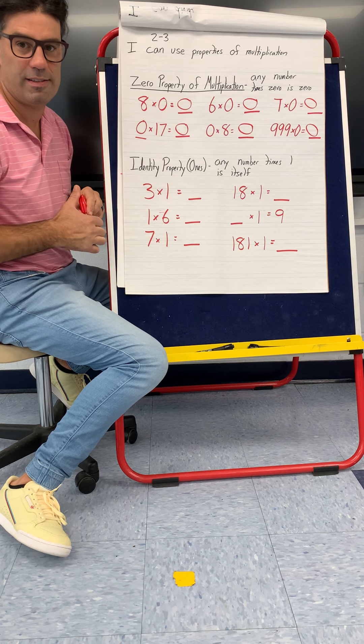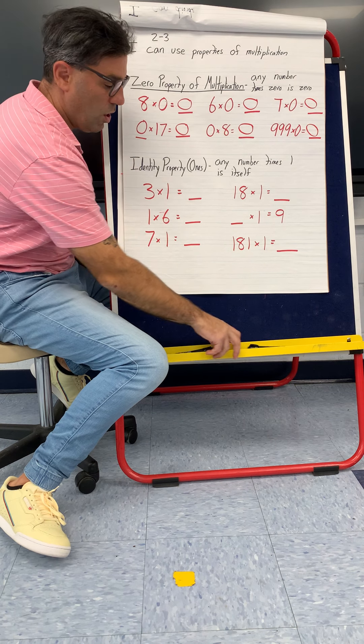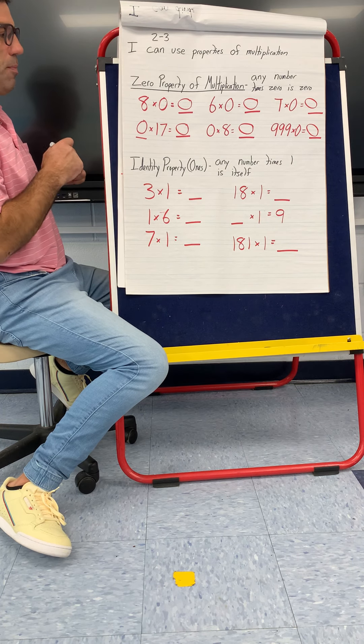And any group of zero is just, well, that's zero. Easy enough. So our next one is going to be called the identity property.